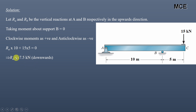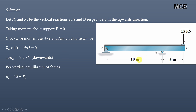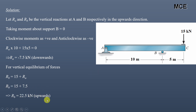Since Ra came out negative, it means it acts in the downward direction. For vertical equilibrium of forces, since Ra is now downward, Ra plus 15 kN equals Rb in the upward direction. So Rb equals 22.5 kN acting upward.